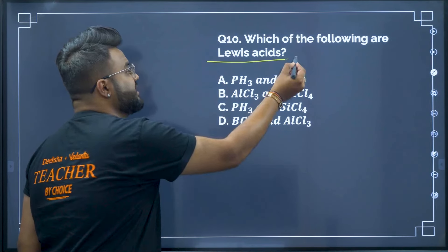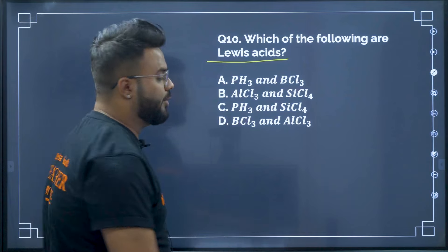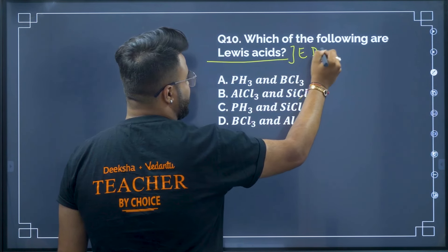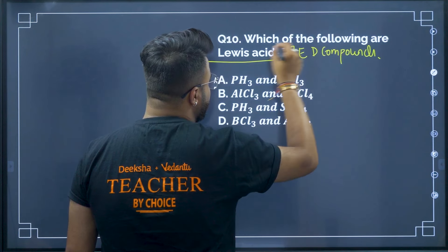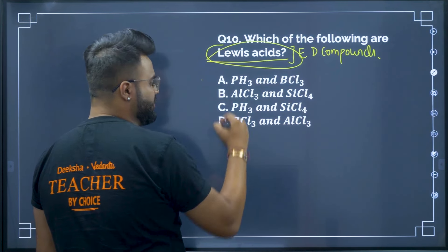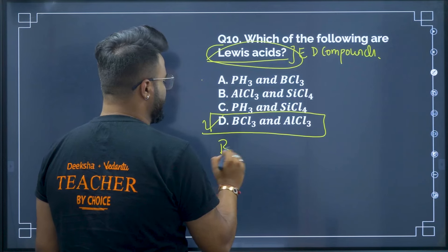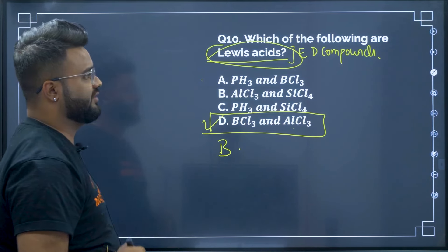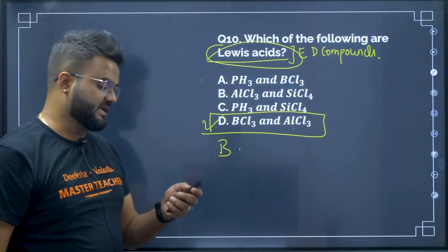Question 10: Which of the following are Lewis acids? Lewis acids are electron-deficient compounds. Among the options, boron trichloride and aluminum chloride are electron-deficient species. Therefore option D — BF₃/AlCl₃ — is your correct answer, as they are Lewis acids.